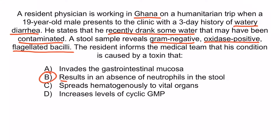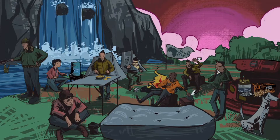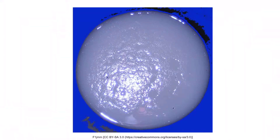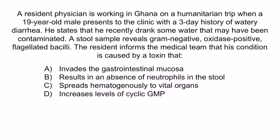The correct answer is B: results in an absence of neutrophils in the stool. The rice water diarrhea mnemonic reminds us that cholera toxin induces mucus production and causes intestinal epithelial cells to slough off. The organism doesn't produce intestinal damage, so no blood or inflammatory debris is present — the toxin is non-inflammatory. Answer A is incorrect because Vibrio cholerae doesn't invade the GI mucosa; that's more typical of Shigella or Salmonella, which cause bloody diarrhea. C is incorrect because hematogenous dissemination describes Salmonella. D is incorrect because Vibrio cholerae increases cyclic AMP, not cyclic GMP.